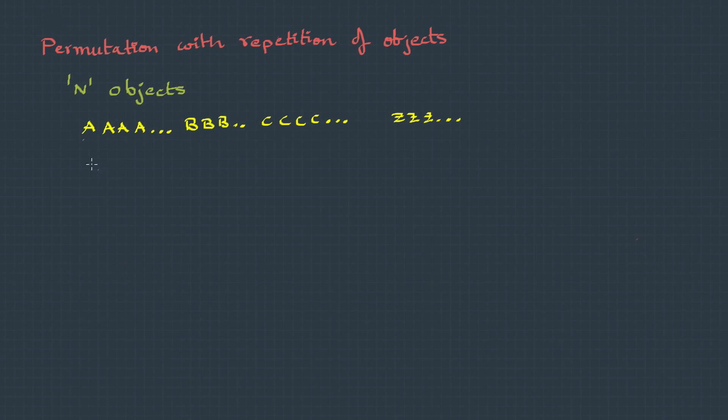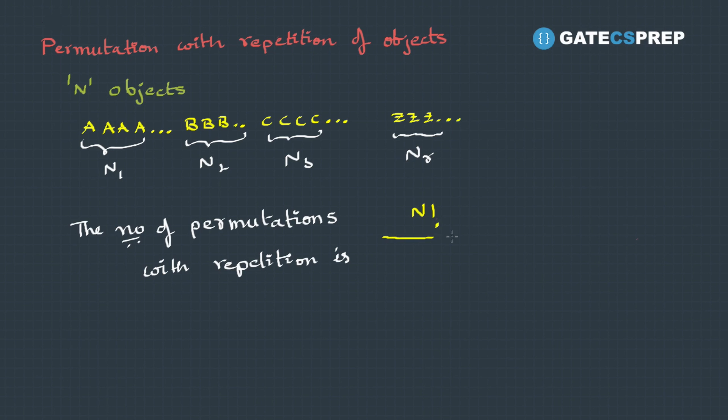Now let's generalize this for a set of n objects with n1 of first kind, n2 of second kind, n3 of third kind and so on some nr. Then the number of permutations with repetition is first we take permutation of all objects which becomes n factorial divided by we remove the permutation of first kind which is n1 factorial and the second kind which becomes n2 factorial, then n3 factorial and so on till nr factorial.